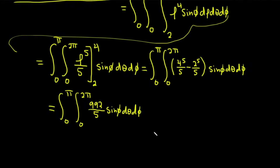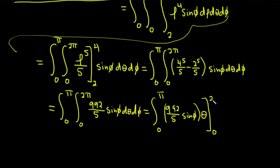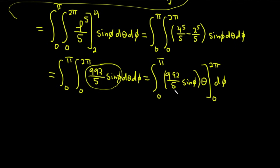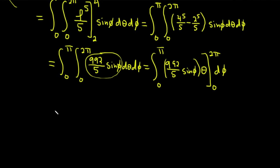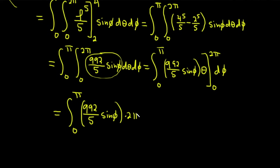Now we integrate with respect to theta. Everything — 992 over 5 and sine phi — is constant with respect to theta, so integrating gives 992 over 5 times sine phi times theta, evaluated from 0 to 2 pi. Plugging in 2 pi and subtracting zero, we get the integral from zero to pi of 992 over 5 times sine phi times 2 pi, d phi.